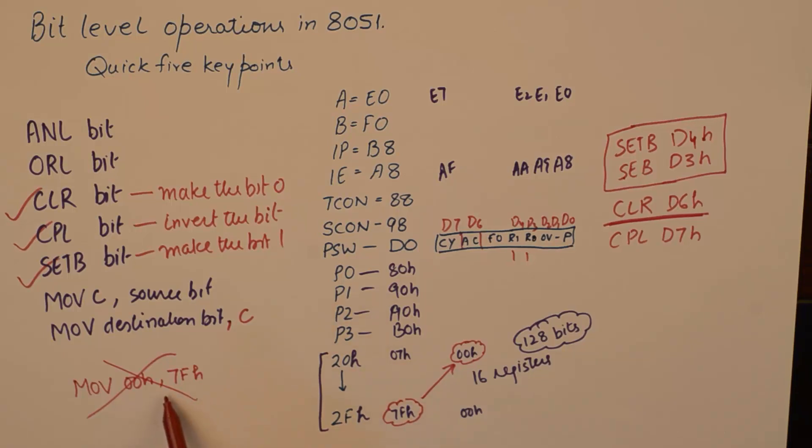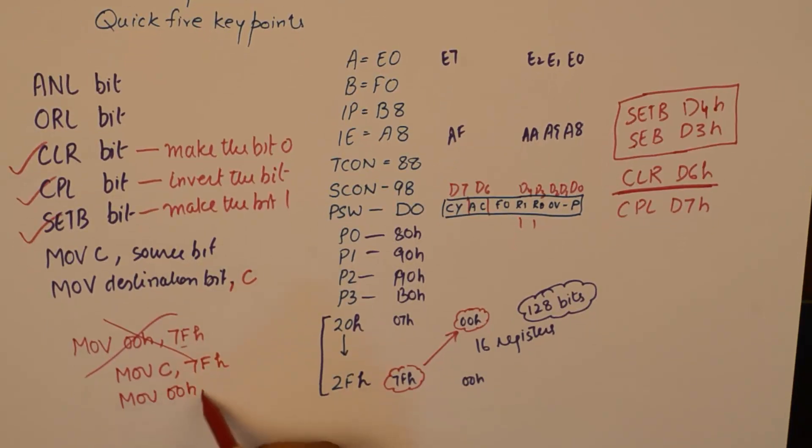Because this instruction would move the contents of the register 7FH into the register 00H. However, if we want to achieve or accomplish this operation, we need to take help of the carry. So what I'll do is I'll move into carry the contents of 7FH bit, and then I'll move into 00H the contents of carry.